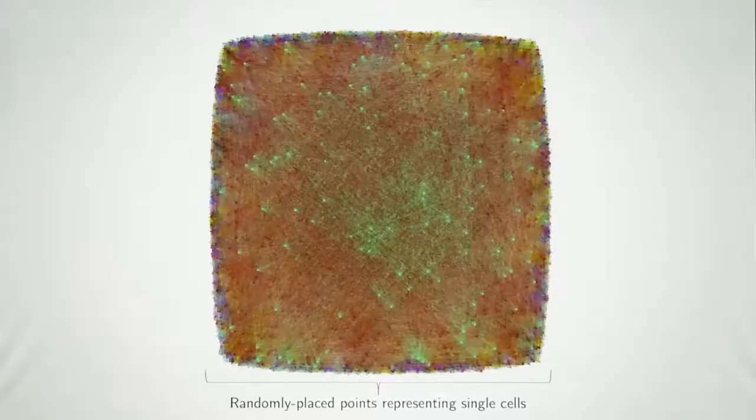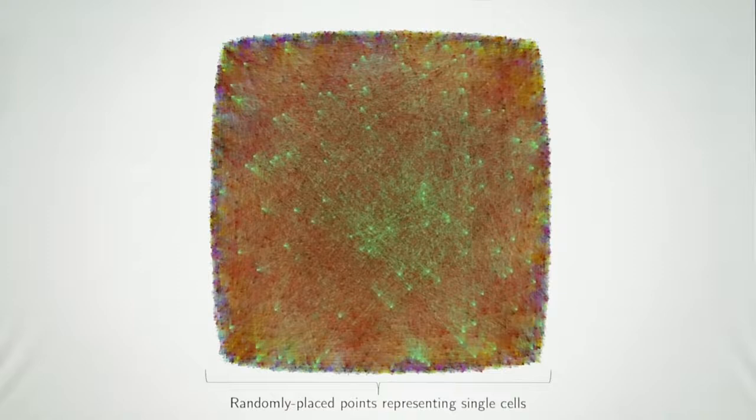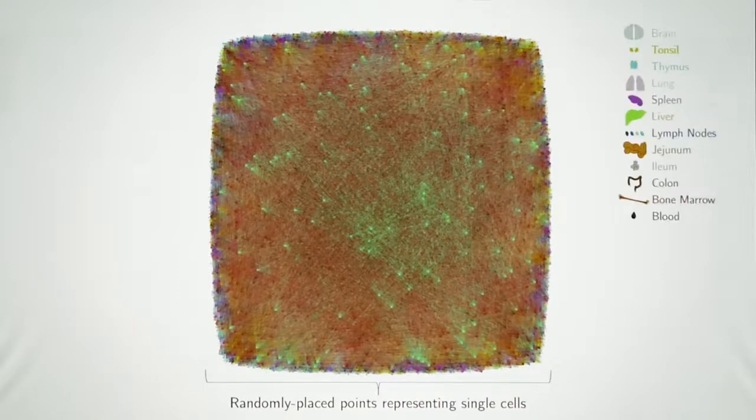So what we did was we took all of this data, represented each little point here, if you can squint and see them, are individual single cells. Each point is colored by the tissue of origin, so gray for your brain, pink for your lungs, and so on.